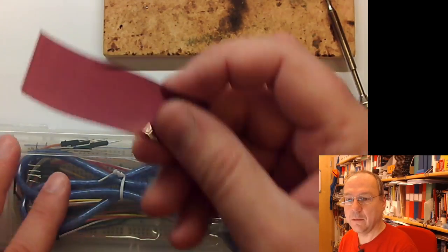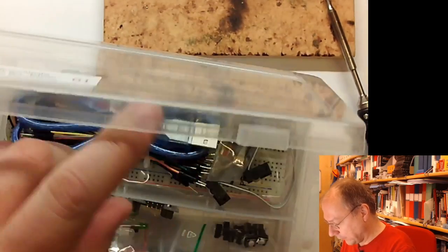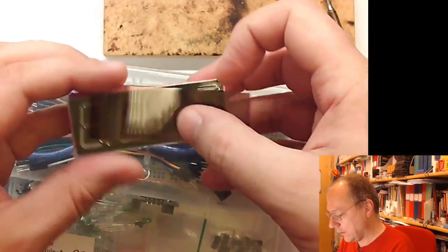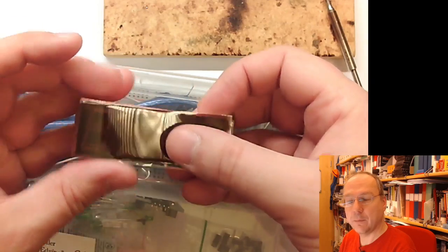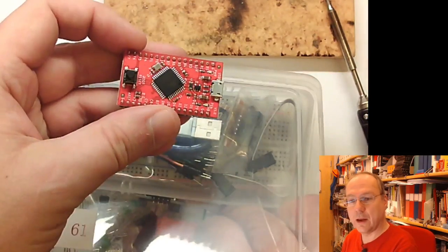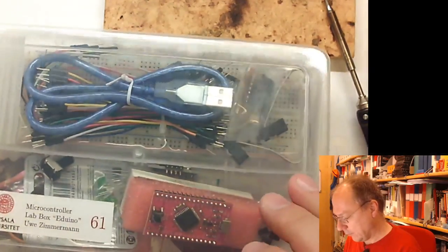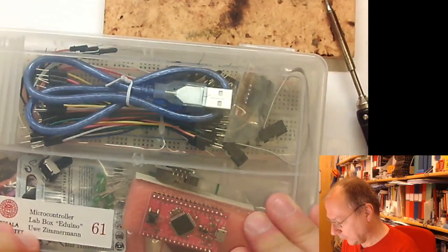I forgot one thing. I'll also put in a red plastic film which can be used to enhance the contrast on our led displays and of course I forgot to put in our microcontroller board here. So now box number 61 is complete.